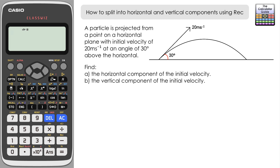Let's take a look at the first question. A particle is projected from a point on a horizontal plane with an initial velocity of 20 meters per second at an angle of 30 degrees above the horizontal. We need to find the horizontal and the vertical component of the initial velocity. We're going to find both simultaneously using the REC feature on the calculator.